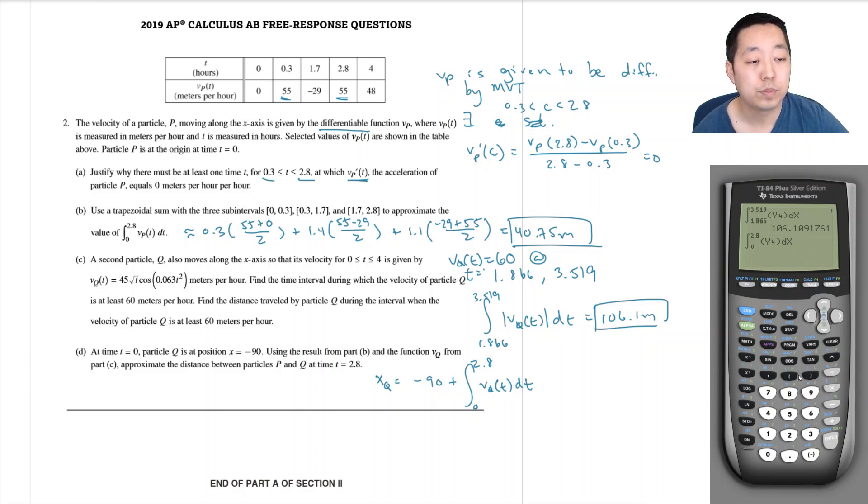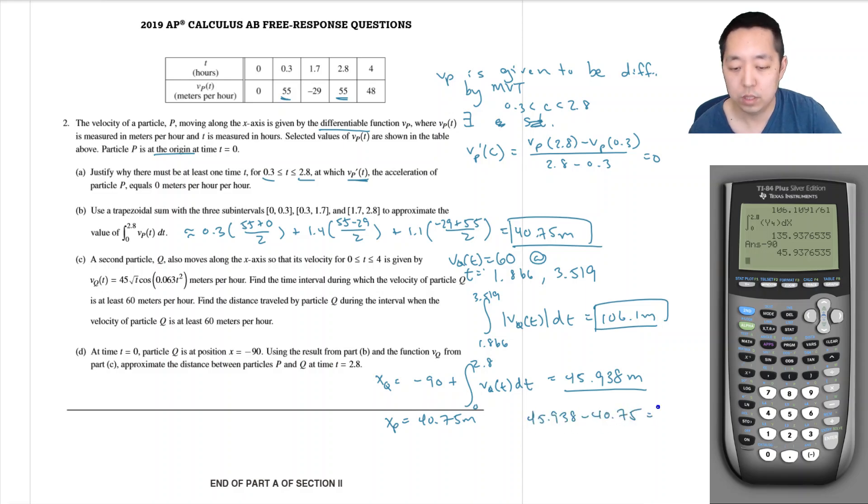I need to subtract 90 from this too, by the way. And I get 45.938 meters. And our approximate position for position P - well it started at the origin, so its displacement was 40.75. So the distance between them is just this minus this: 45.938 minus 40.75 is equal to 5.188 meters.